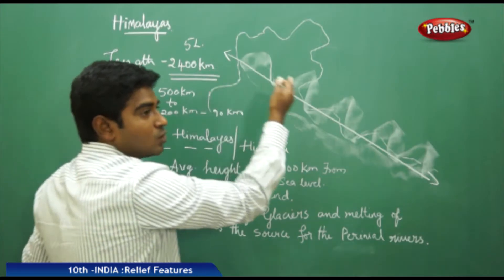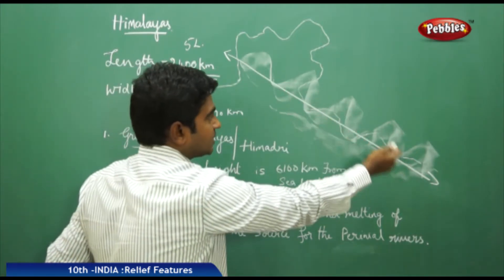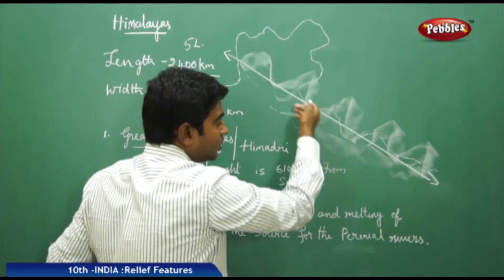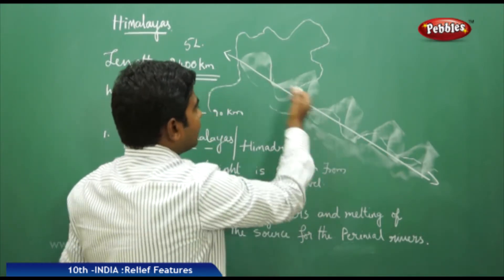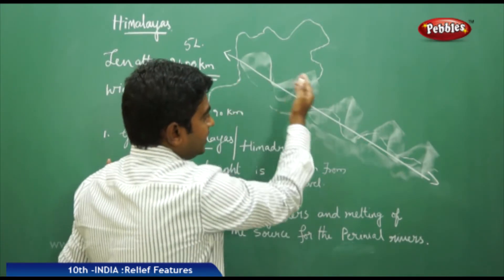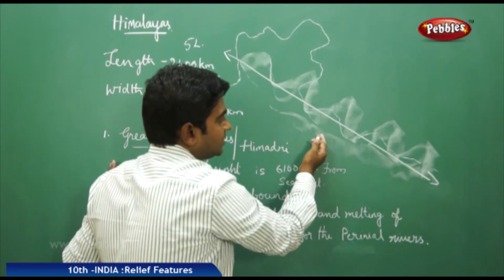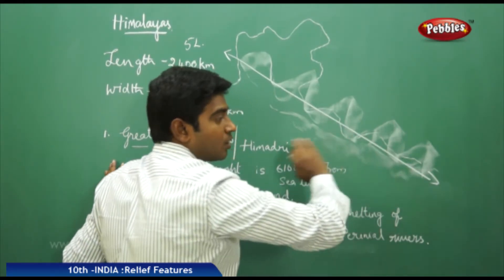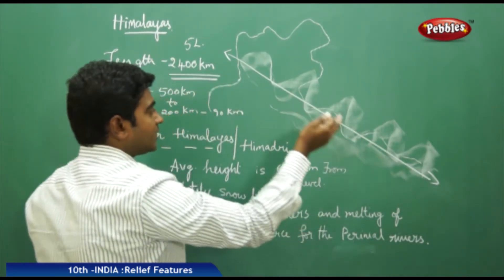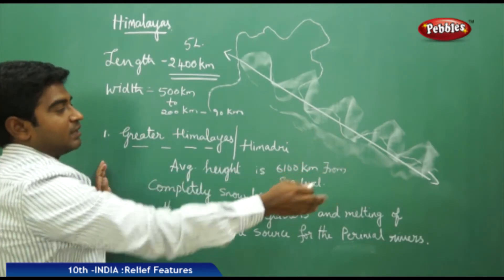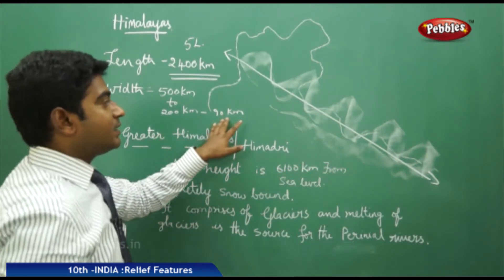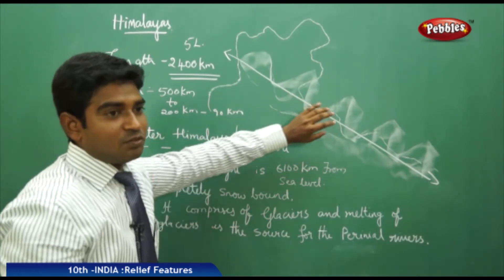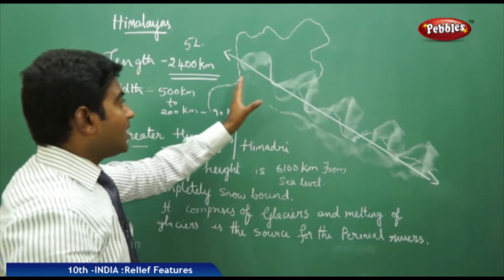As they move towards the northeast, the width keeps reducing — from 500 kilometers in some areas to 300, then to 200. As it reaches the Arunachal Pradesh region, it comes to its lowest width of 90 kilometers.